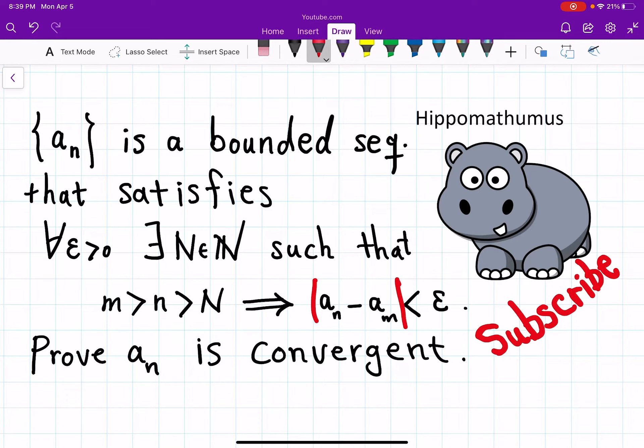If we had the absolute value here then this would be a famous theorem that all of we know. If you have a Cauchy sequence then you have a convergent sequence in R. And this question is saying that actually a weaker condition is sufficient to conclude convergence.